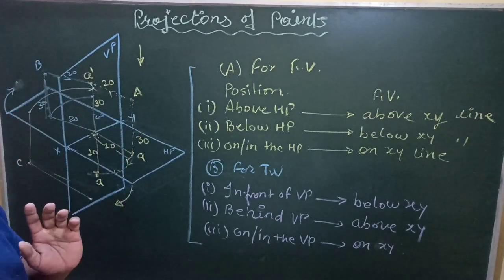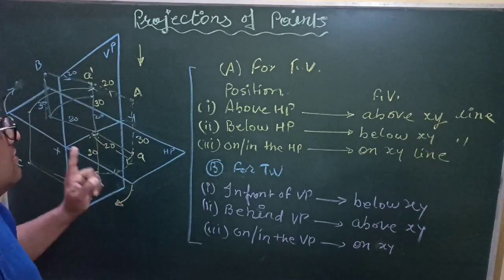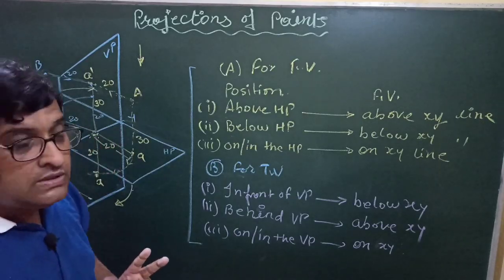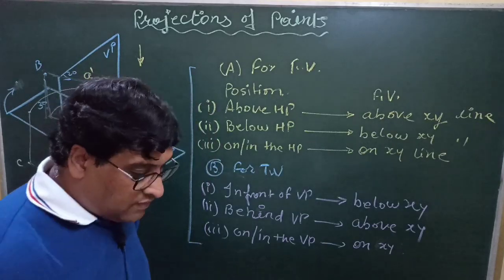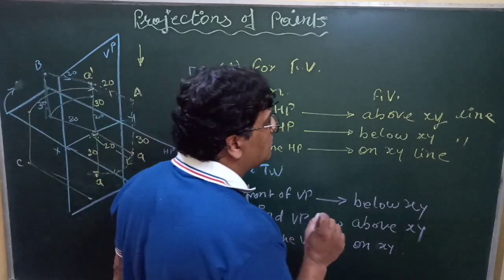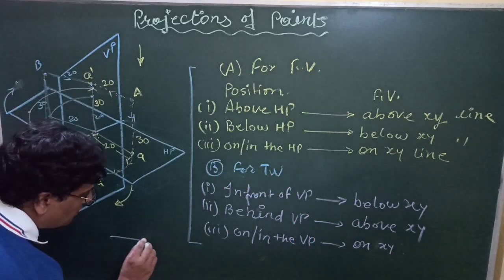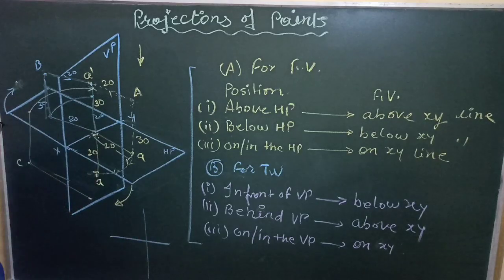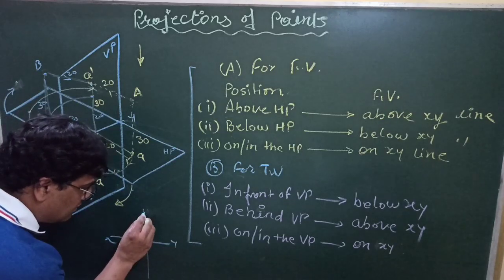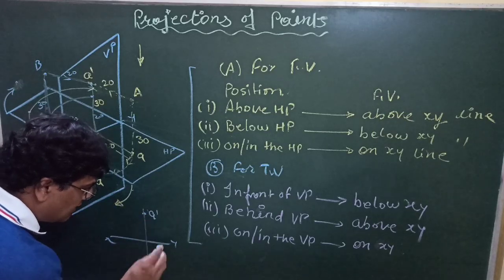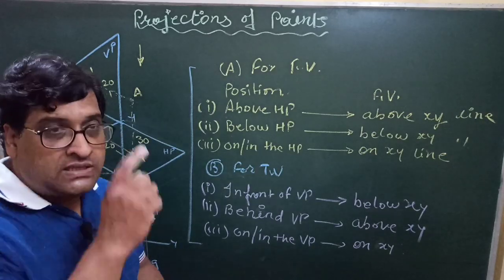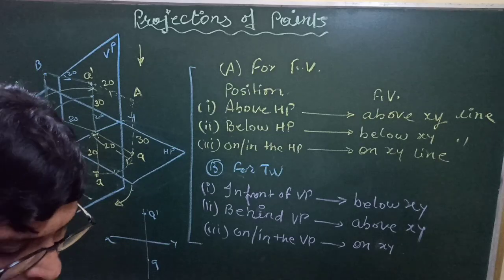Always remember these six lines so that your projection of points problems will not be wrong. Key points: distance from HP is visible in front view; distance from VP is visible in top view; and projections of a point always coincide on a single vertical line — both the views, A dash and A, must lie on that single vertical projector line.